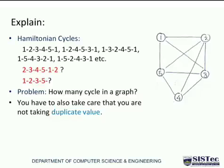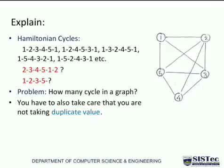Is there any other cycle? We can check: 1 to 2, 2 to 5, 5 to 4, 4 to 3, and 3 to 1 — of course, one more cycle is there. So there can be more than one possible Hamiltonian cycle in a given graph.